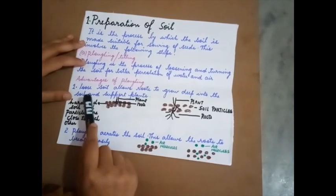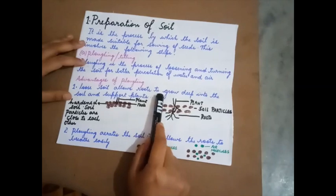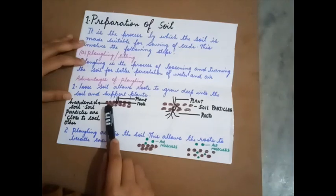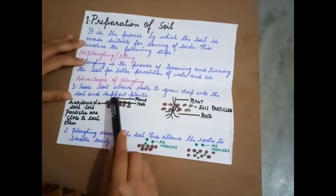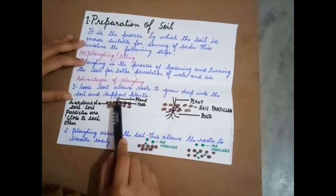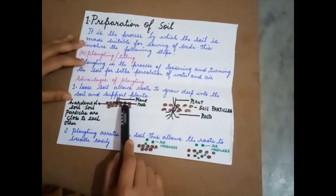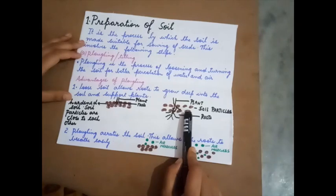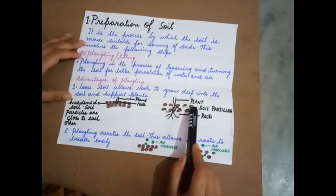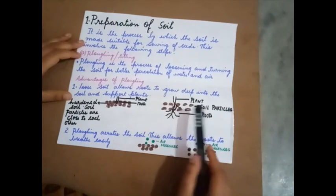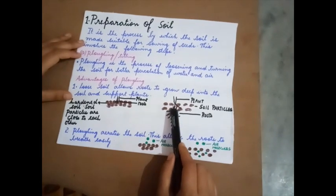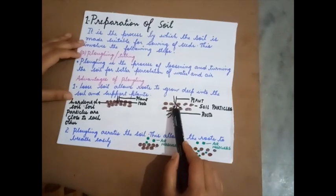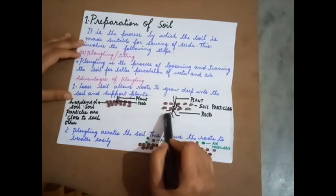Advantages of plowing: loose soil allows roots to grow deep into the soil and support plants. Looking at the diagram, when soil particles are close to each other the roots cannot penetrate. But in plowed soil, the soil is loose with gaps between the soil particles, allowing the roots to easily percolate and move into the soil.